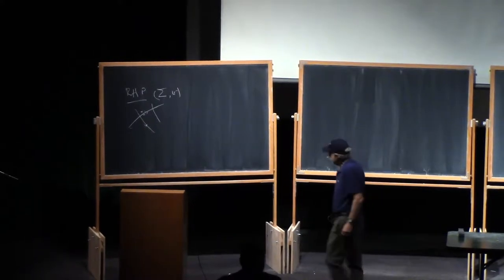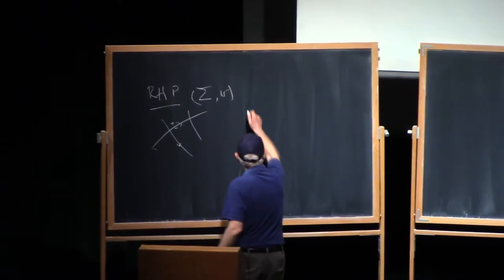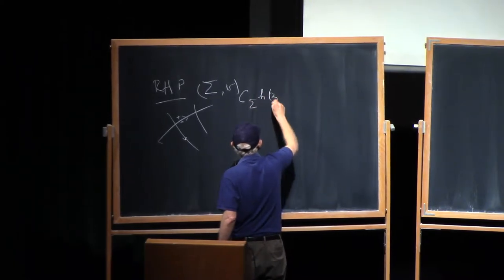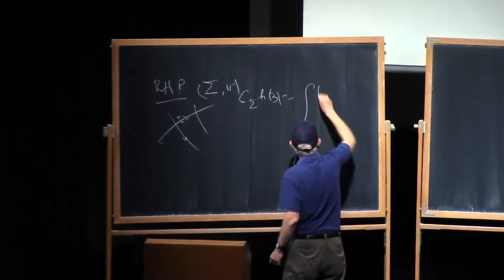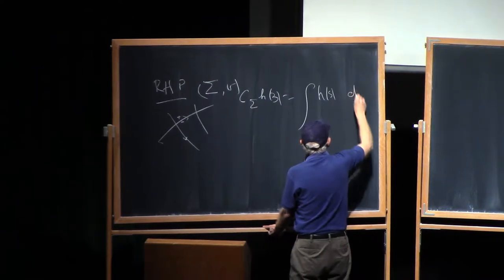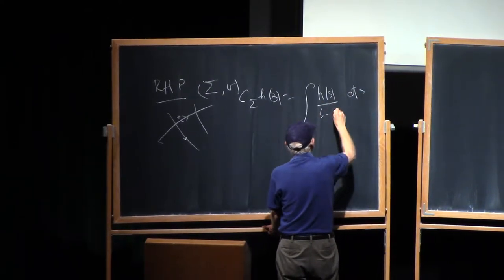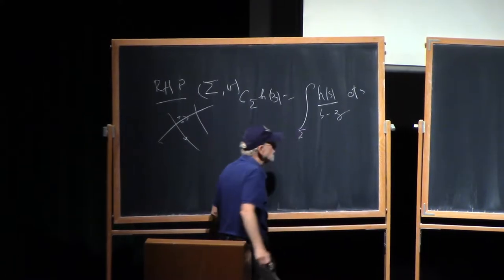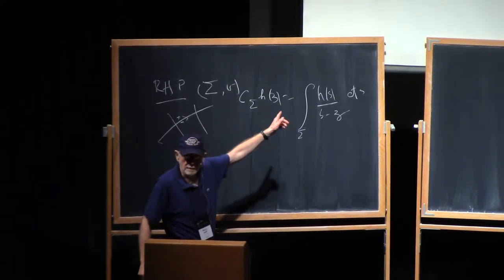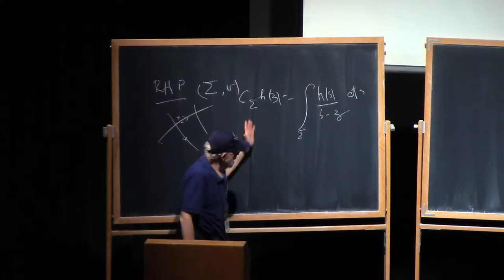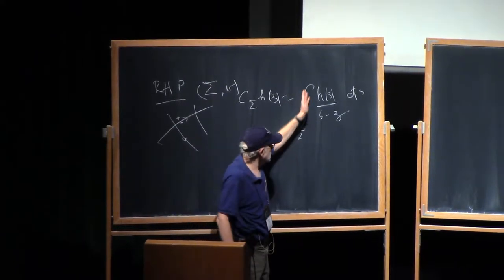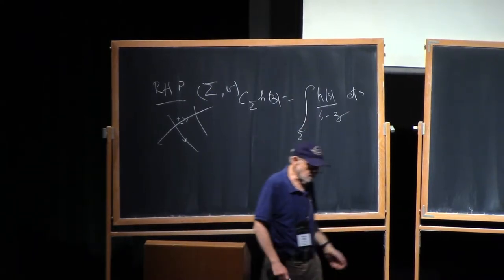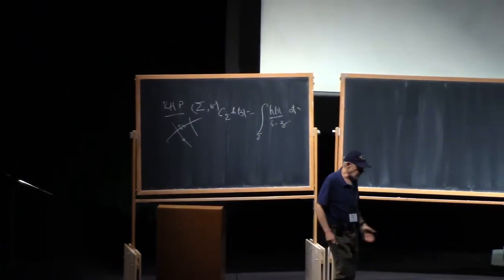That enabled us to introduce, on any contour sigma, we could introduce C of H at Z, to be the integral of H(s) dbar(s) upon (s minus Z). This is over the contour. dbar means ds over 2πi. So because we have rectifiable contours, we have a measure on each of the arcs.